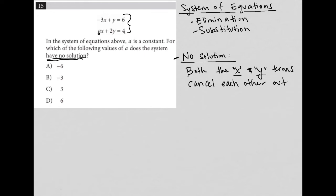So how does that work? Well, if I have negative 3X plus Y equals 6, and I have AX plus 2Y equals 4,